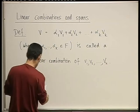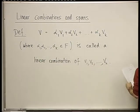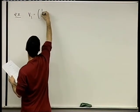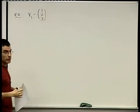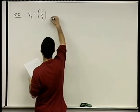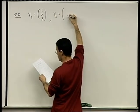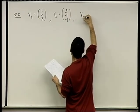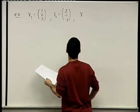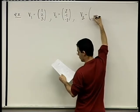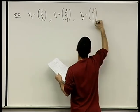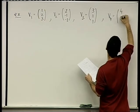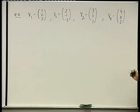Quick example. Let's take V1 to be the vector (1, 2, 3) — a vector in R³. Let's take V2 to be (2, -1, -2), V3 to be (3, 1, 1), and V4 to be (4, 0, 2). These are four vectors in R³.